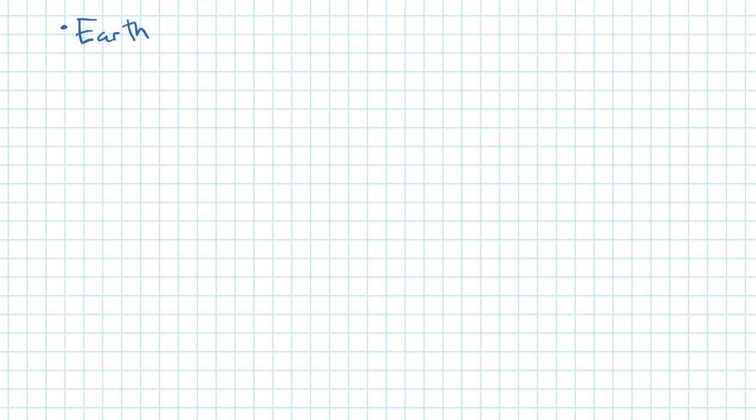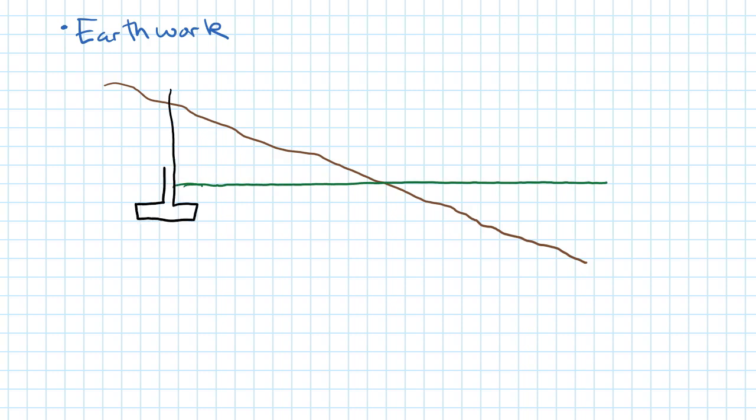This second example involves earthwork. Most civil engineering projects involve some type of earthwork. What we have here is sloping ground conditions. That brown line, the sloping ground conditions, is the initial site conditions and the green line is the final site grade. That's what I want my ground condition to be like for my new office building and parking lot that I have on the site.